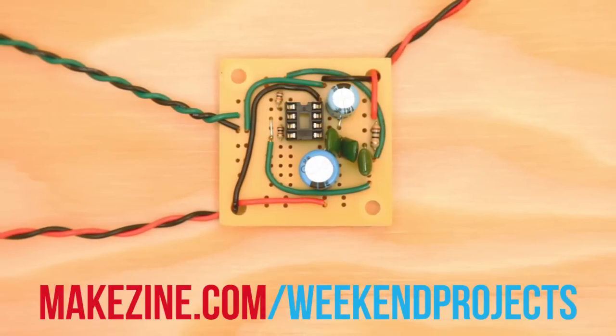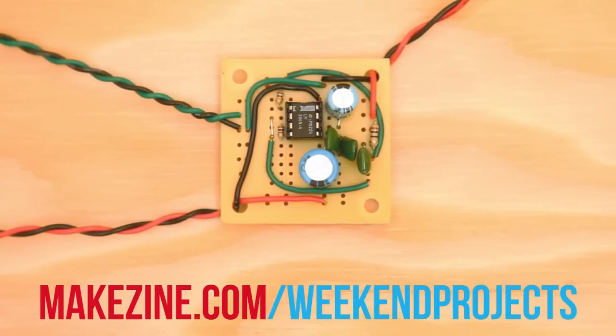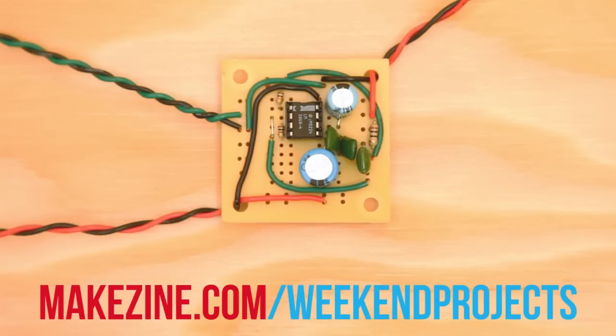Finally, plug the LM386 amp chip into the socket so that the little dot on the top of the chip will be in the upper left. That's it. You've just built an amplifier.